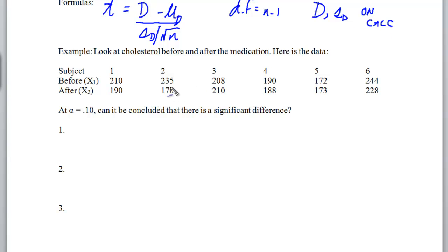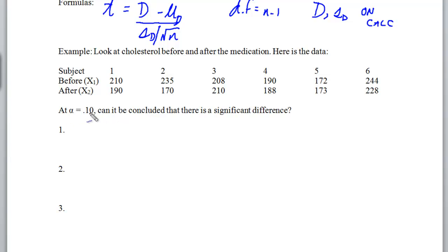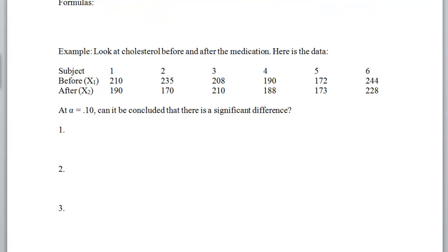I'm going to get the calculator to give me the average and standard deviation first. I'm looking at cholesterol before and after medication. Some people have lowered their cholesterol, and I want to make sure I haven't rejected the null hypothesis when it was true. At an alpha of 10%, can it be concluded there's a large significant difference? Since nothing specific is declared about direction, the alternative hypothesis is mu sub d not equal to zero — a two-tailed test.